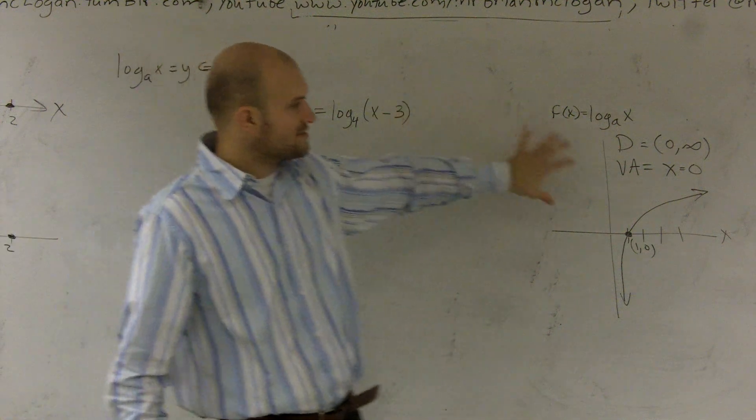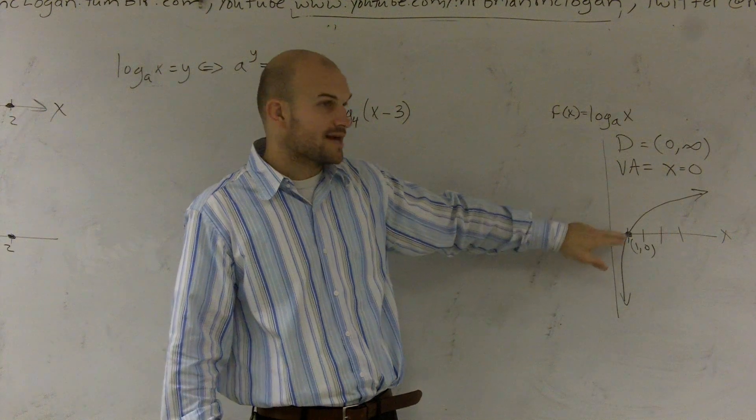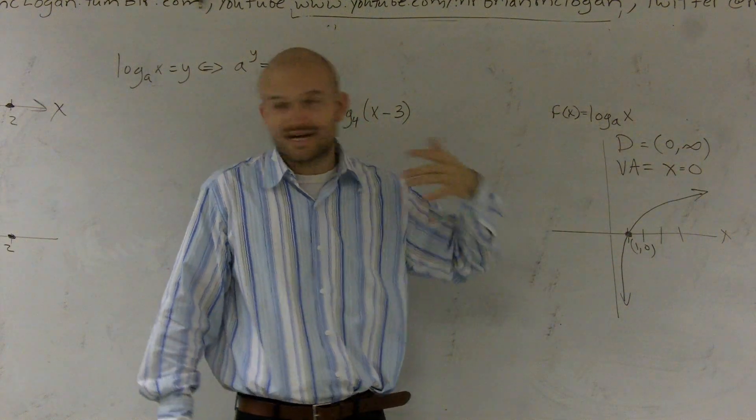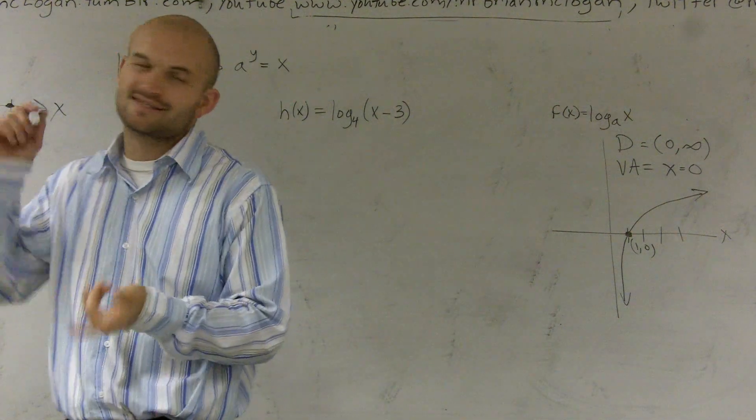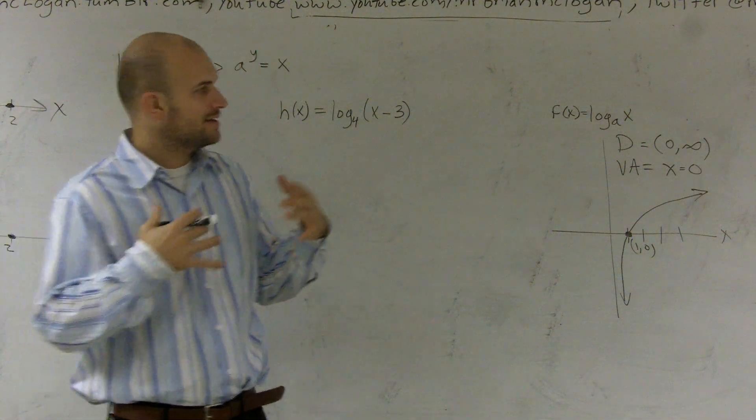All right, so now, if you guys look at this, we have our parent graph, right? There's a logarithm. We know it crosses at 1 comma 0. Our domain is 0 to infinity, and our vertical asymptote is x equals 0. It should be in your outline. It should be memorized as much as possible so you just absolutely remember it, know exactly what it looks like.